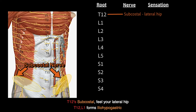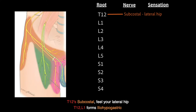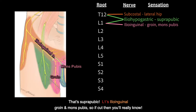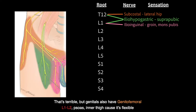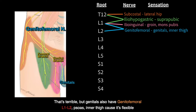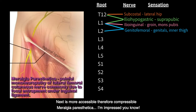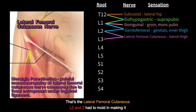Feel your lateral hip — T12, L1 forms the iliohypogastric nerve, that's suprapubic. L1's ilioinguinal covers the groin and mons pubis. So if cut, then you really know that's terrible but genital. Also have the genitofemoral at L1-L2 — so it's inner thigh, cause it's flexible.